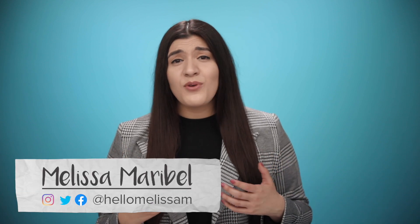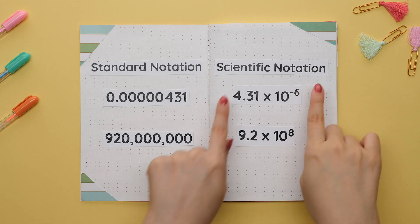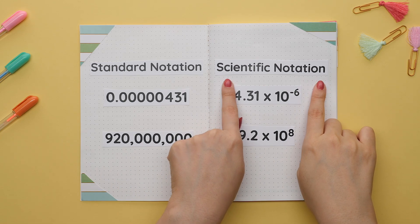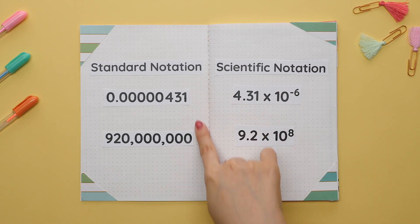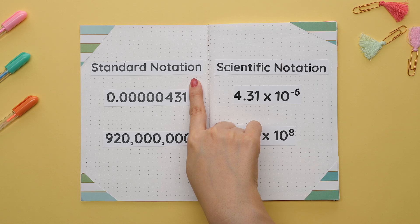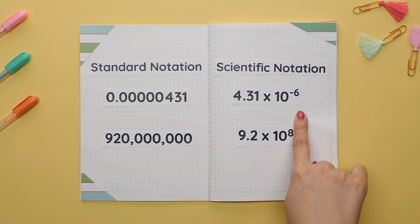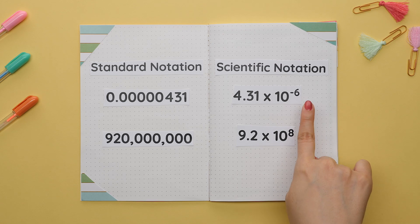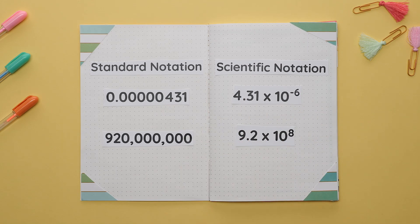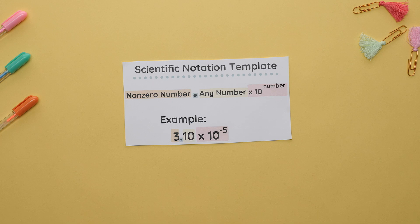In math and science classes there's a specific way to write really small or large numbers. This is called scientific notation. The way we typically write regular numbers is called standard notation. You will be asked to convert from standard notation to scientific notation or vice versa. So let's learn the general form for a number in scientific notation.